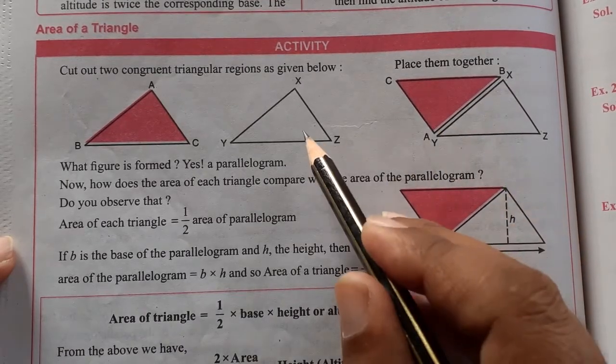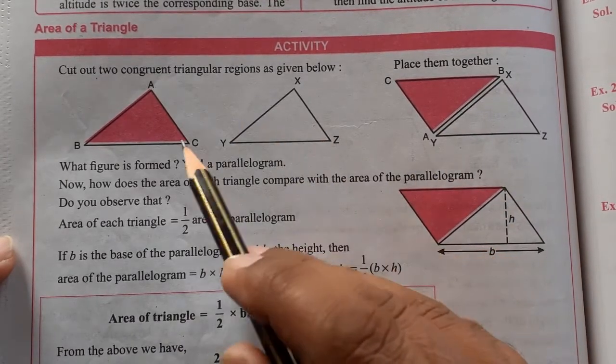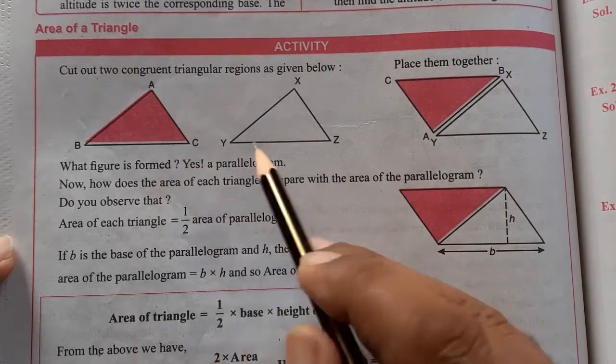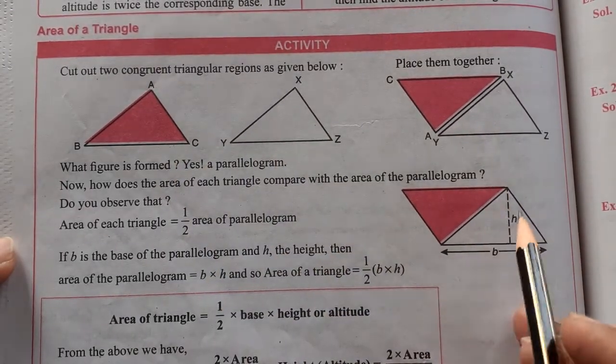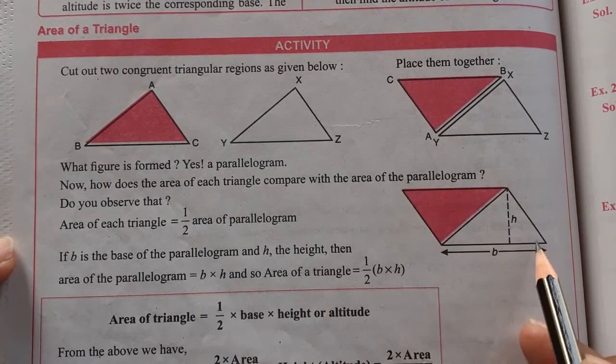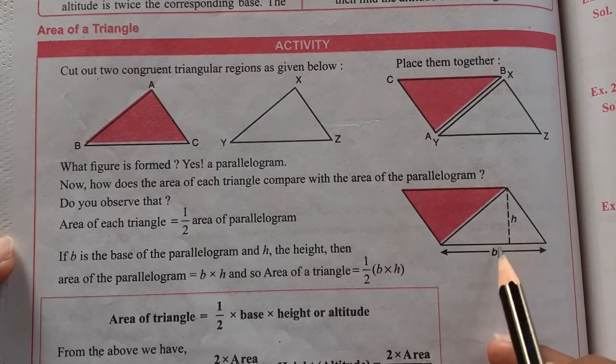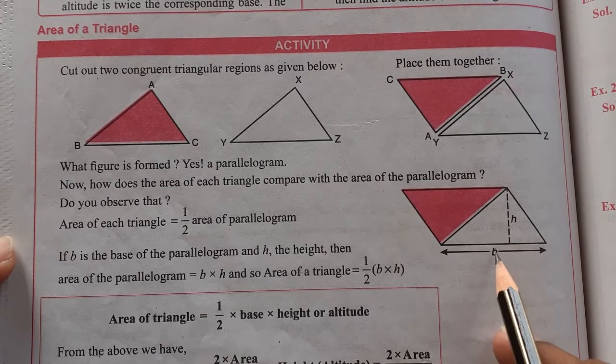The same way of the second triangle in the opposite direction of this side will form a parallelogram. In the parallelogram we need height and base. Now we know that the area of a parallelogram will come from base into height.